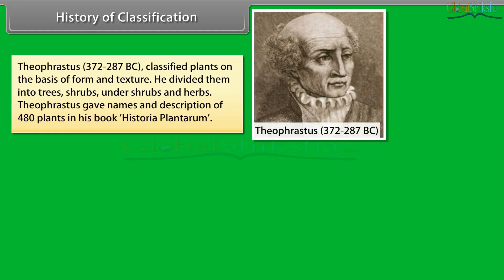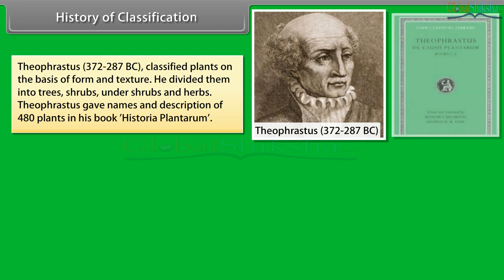Theophrastus, 372 to 287 B.C., classified plants on the basis of form and texture. He divided them into trees, shrubs, undershrubs, and herbs. Theophrastus gave names and descriptions of 480 plants in his book Historia Plantarum.